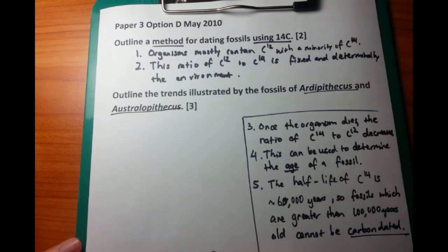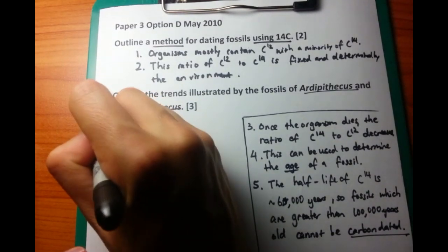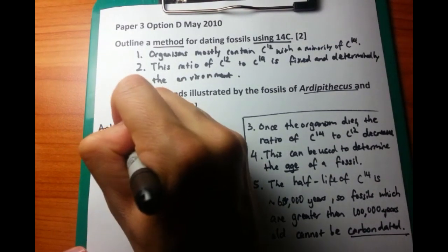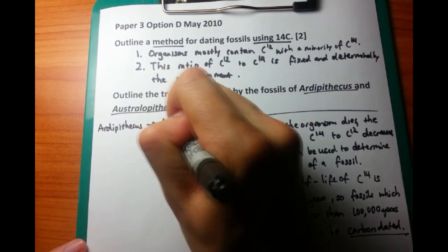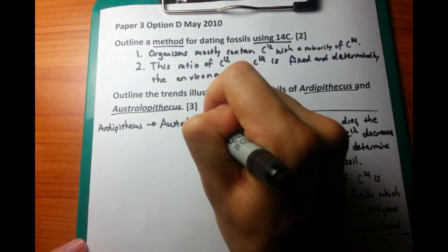Now, the second question, worth three points. Outline the trends illustrated by the fossils of Ardipithecus and Australopithecus.